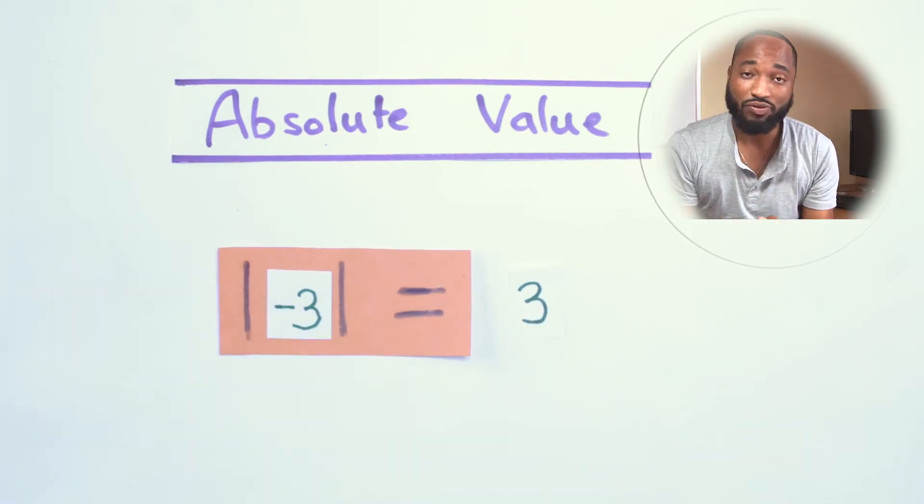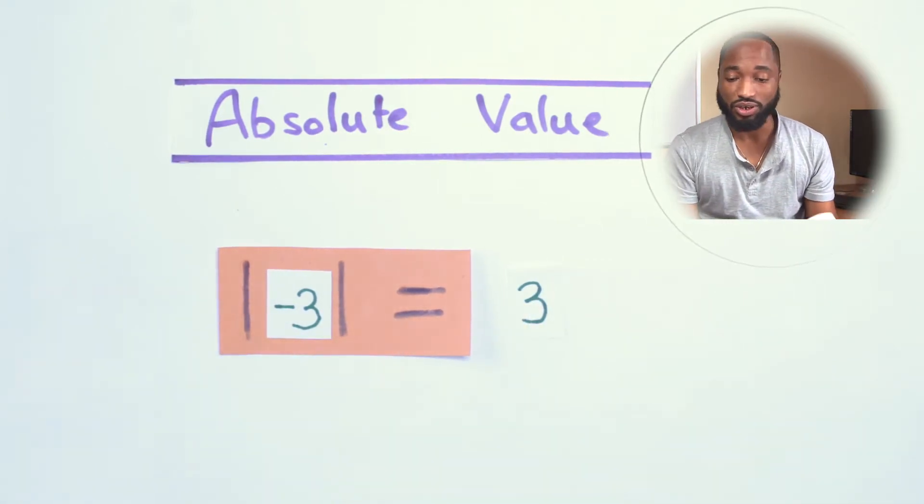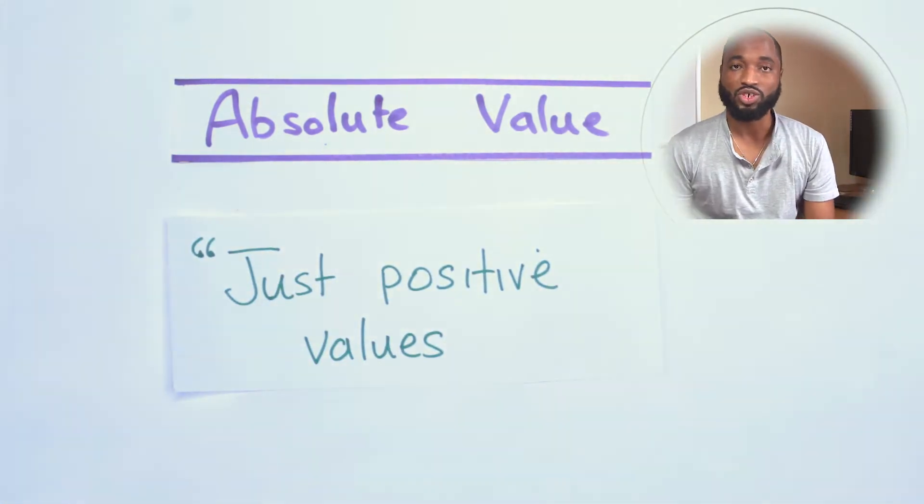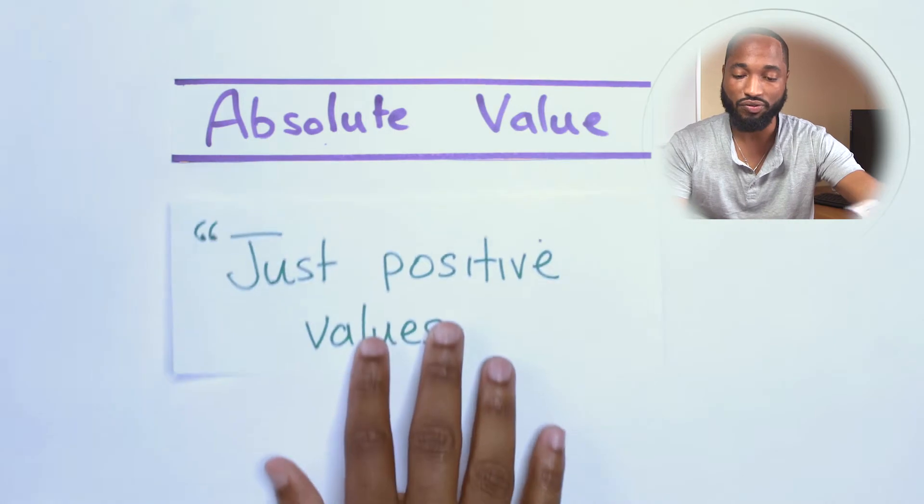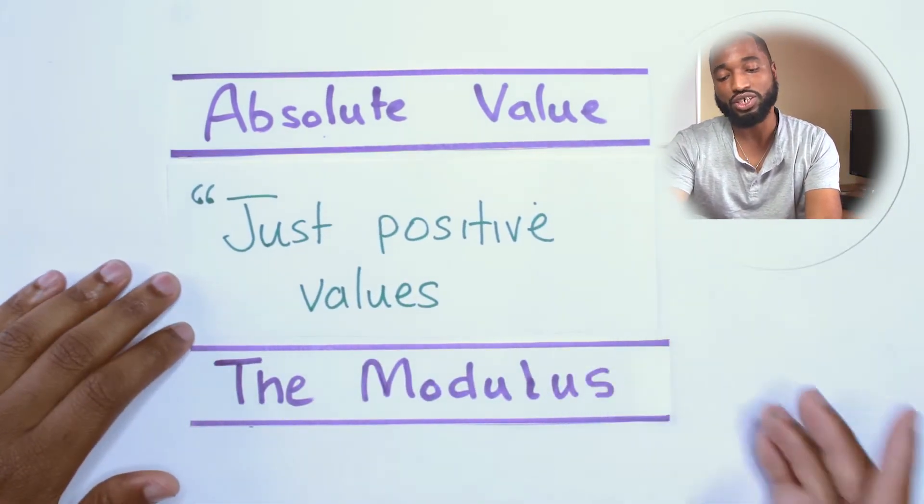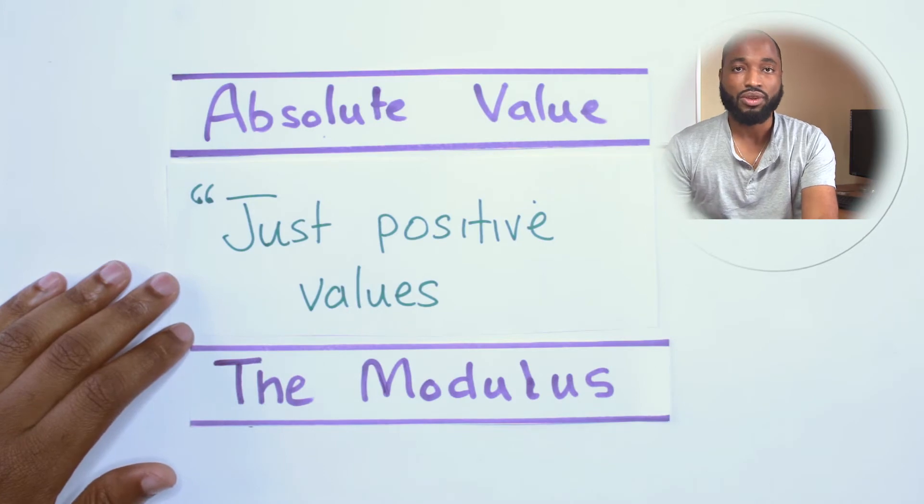Absolute value just takes the positive value. So anytime you see absolute value, just positive values. Another way for this is modulus. So absolute value, we just want the positive values of the number or equation, whatever it is.